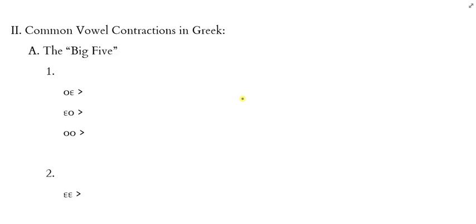So the first thing we want to do in this chapter is talk about what those contractions are, and then we'll look at how they occur in real Greek verbs. There are going to be five important rules — these are the ones that Mounce asks you to memorize, and they're the ones I ask you to memorize. Some of them you've actually seen before. I like to specify first which vowels are coming together and then show what they produce.